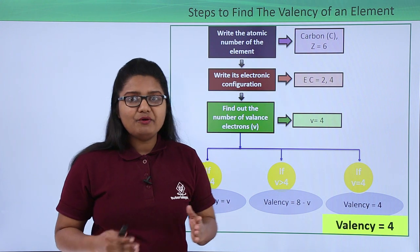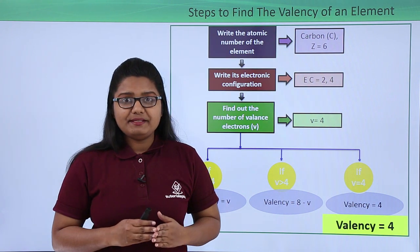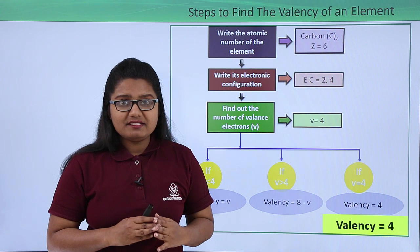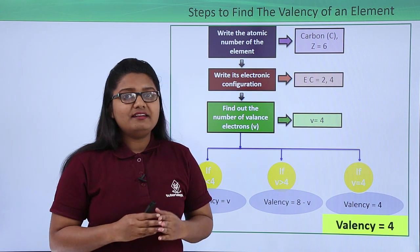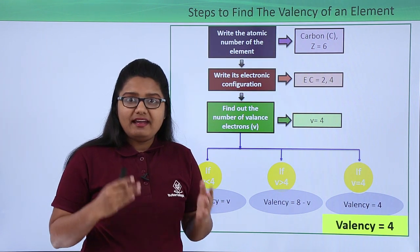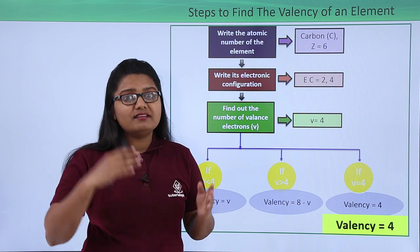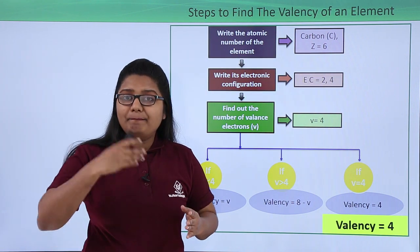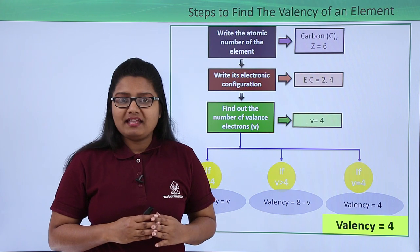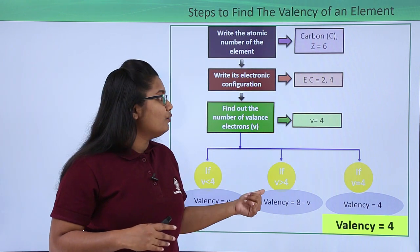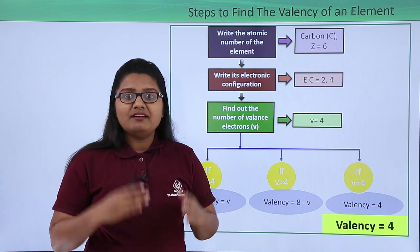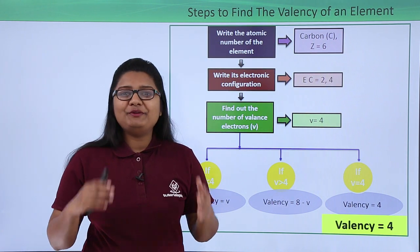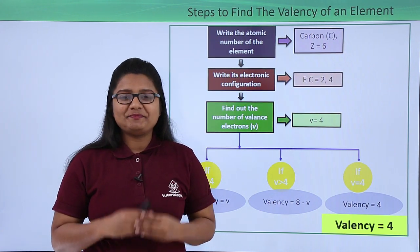So in this video we learned what valency is — the combining capacity of an element — and how to find it by the number of electrons an atom gains, loses or shares while combining with other atoms. We also covered the steps to calculate valency. I hope you had fun learning this lesson. Thank you.